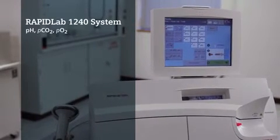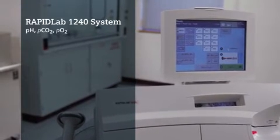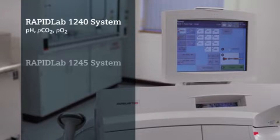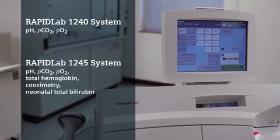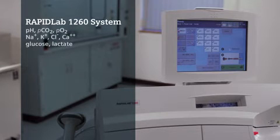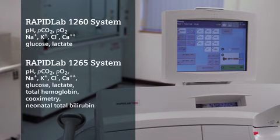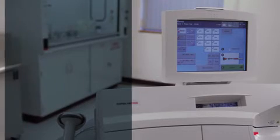There are four different models of the RapidLab 1200 systems, depending on the analytes tested. The RapidLab 1240 and 1245 systems for basic blood gas and co-ops. The RapidLab 1260 and 1265 systems add electrolytes and metabolites to the menu. All use the reliable, long-lasting ReadySensor electrode technology, which require little to no maintenance.